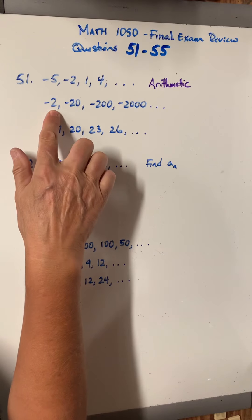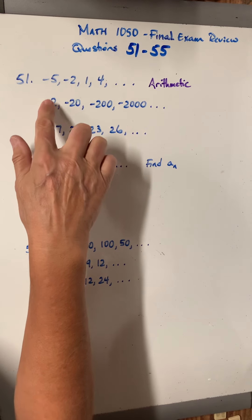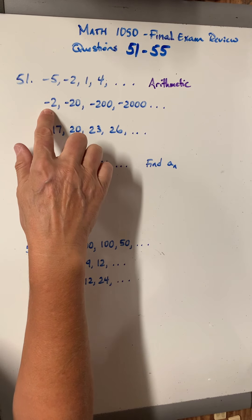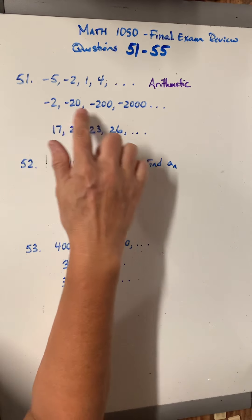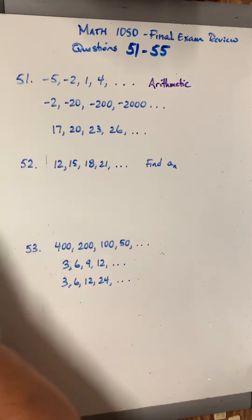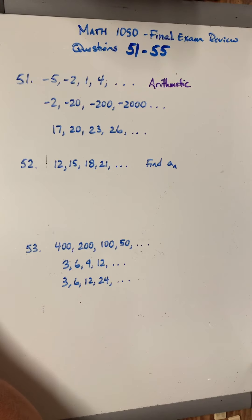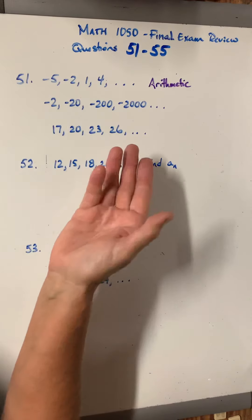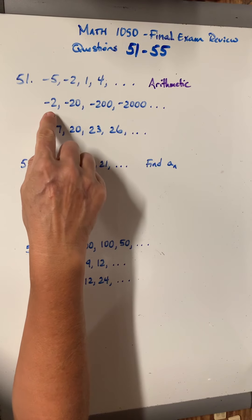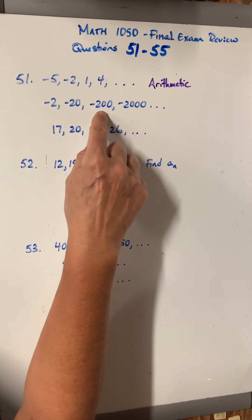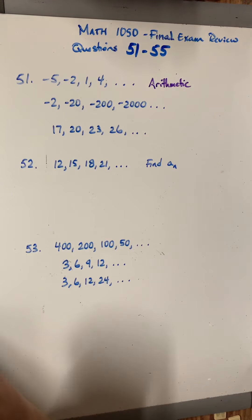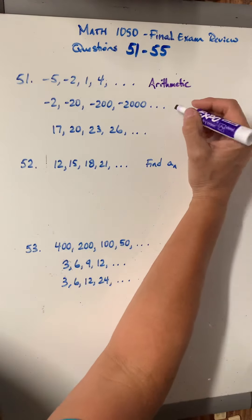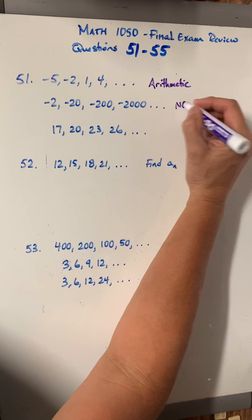So let's look at this one. If I do negative 20 minus negative 2, that would give me negative 18. But negative 200 minus negative 20 would give me negative 180, which is not the same as negative 18. So therefore, this is not arithmetic. You can see that this is, in each case, being timesed by 10, not adding some number. So this is no, not arithmetic.